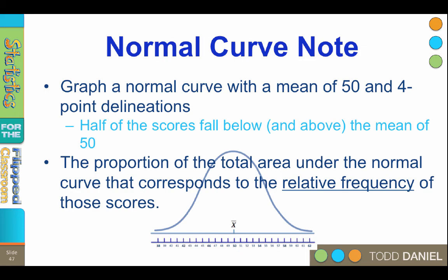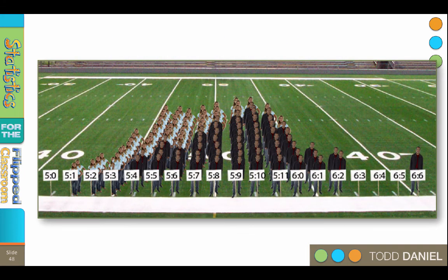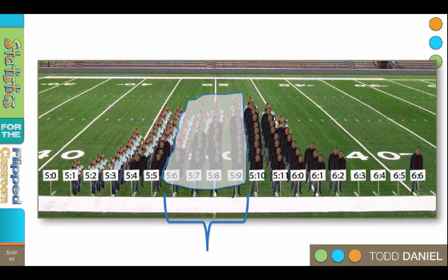To better understand this, let's return to our picture of the people standing on the football field. Remember that everyone, 100%, are standing below the rope that represents our distribution. We want to know the proportion of people who are between 5 foot 6 and 5 foot 9 inches tall. We ask everyone who is in those rows 5 foot 6, 7, 8, and 9 to stay where they are. Everyone else, please leave the field. So how many people are in these four rows? Divide the number of people in the four rows by the total number of people, and you have a proportion. This is the proportion of people who are in that range underneath the distribution. It would also be the relative frequency of the number of people in that range.